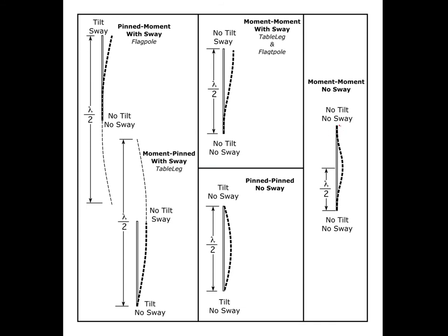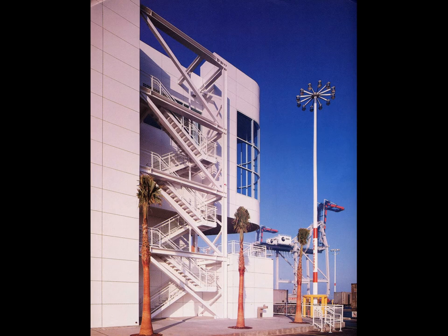We can also end up with a situation where there is no tilt and no sway at the top — this column is coming out vertical and is not moving from side to side. Compared to the table leg which had lateral movement, here we have a moment joint at the bottom and at the top but still have lateral sway in one case. We can restrain movement at the top and also have rigid connections, creating a super braced column which can't have sway and will not have tilt either.